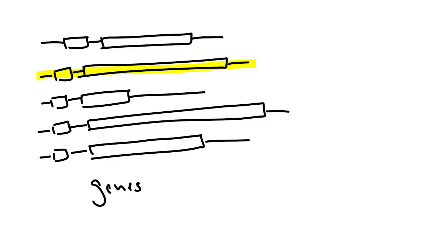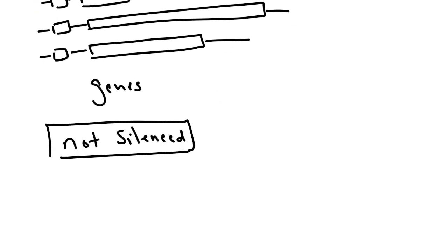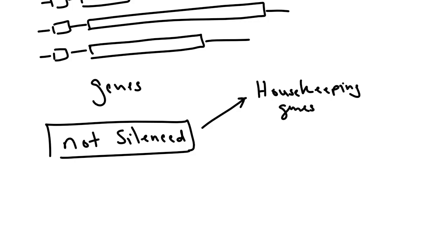Among the genes that are not silenced — meaning RNA polymerase can bind to the promoter and make messenger RNA — you have what we call housekeeping genes. These are genes that all cells express. For example, genes that encode enzymes in cellular respiration, or certain transporters like the sodium-potassium pump and potassium leak channels. All of those are housekeeping genes because all cells express them.